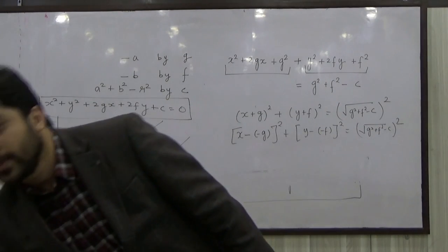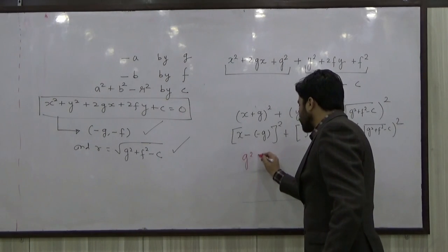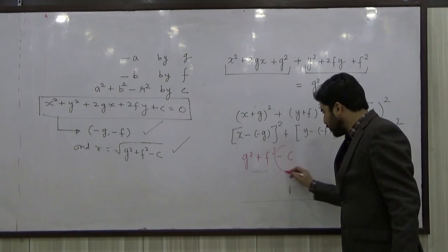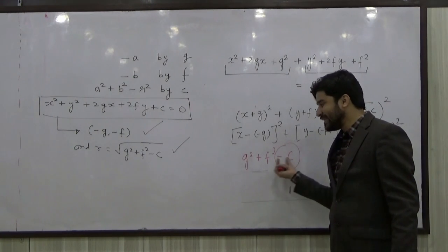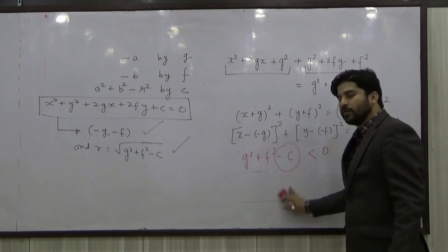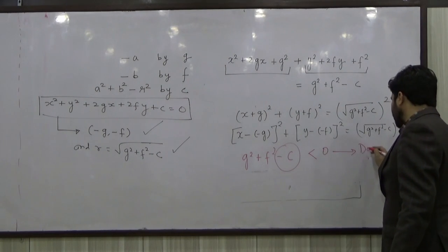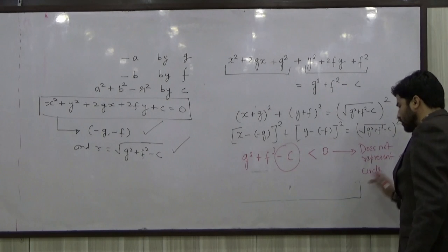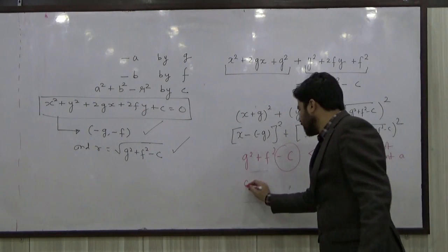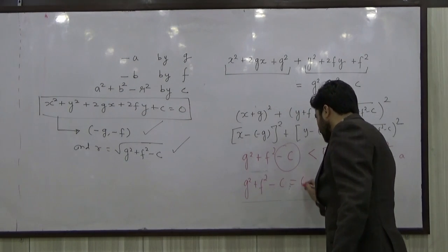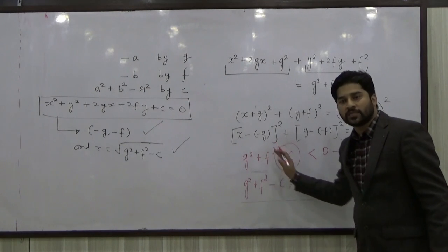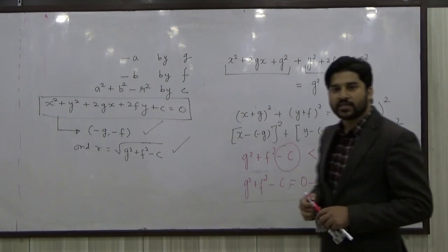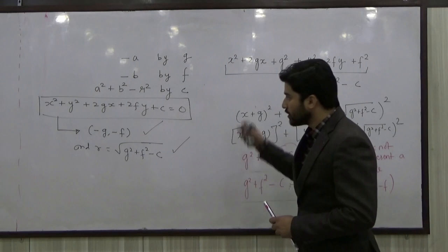One important thing to notice: G² + F² − C involves a positive number plus a positive number minus C, so it can be positive or negative. Sometimes C exceeds G² + F², making the quantity negative. Whenever this happens, the equation does not represent a circle, because you cannot have a circle whose radius squared is negative. Similarly, if G² + F² − C equals zero, the equation does not represent a circle but only a single point, which is the center (−G, −F). This is how we understand the general equation of a circle.